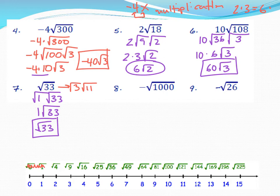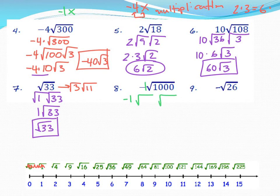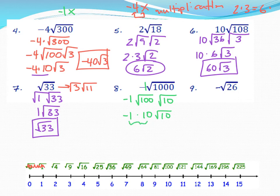Next: -√1000. The negative in front is like negative 1 times √1000. Break 1000 into factors: 100 × 10. Split: √100 × √10. The square root of 100 is 10, so I get: -1 × 10 × √10. Multiply -1 and 10 together: -10√10. Simplified.